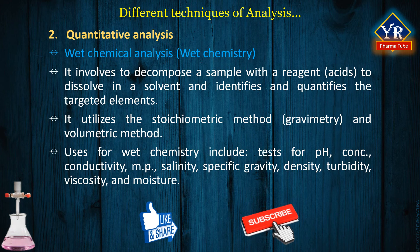Wet chemistry can also involve the elemental analysis of samples — for example, water sources for items like ammonia, nitrogen, chloride, cyanide, fluoride, phosphate, and phosphorus.